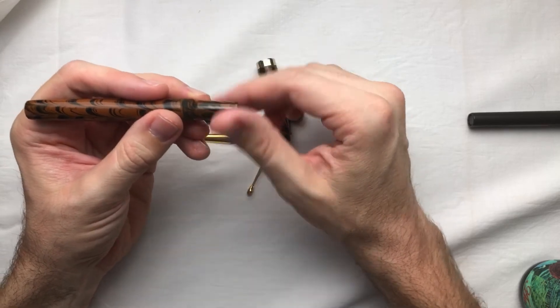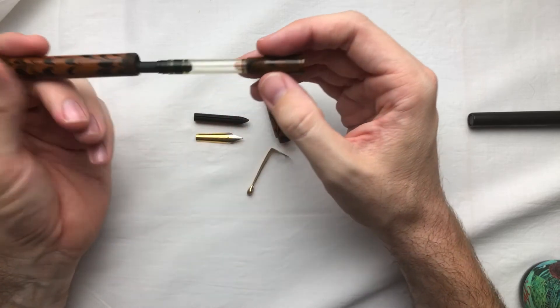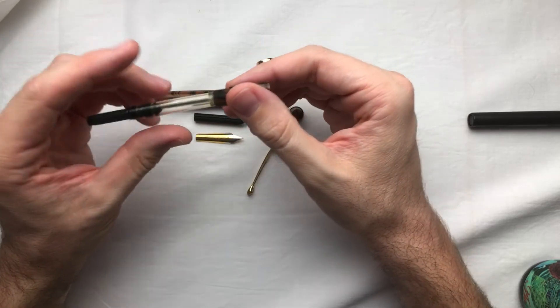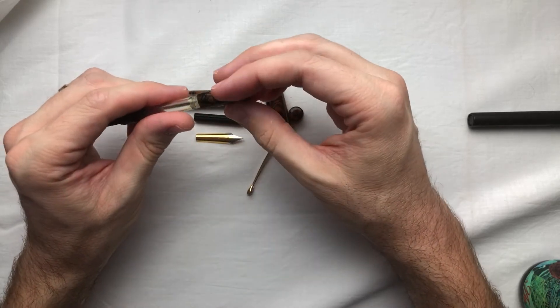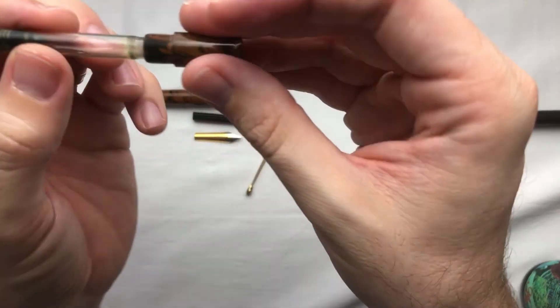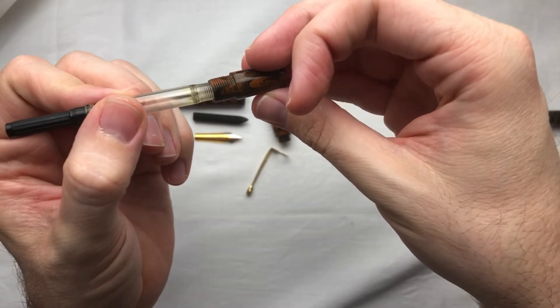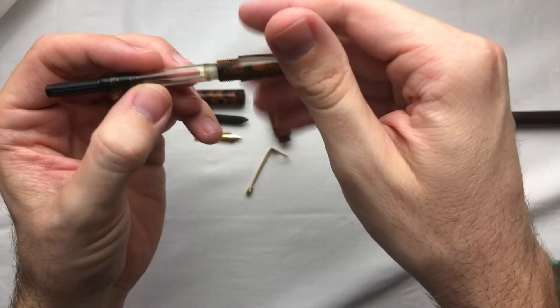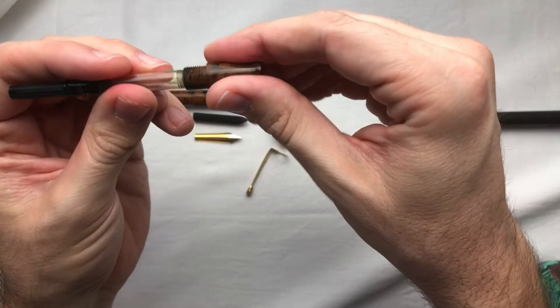So the section unscrews here. And the body is very simple. There's a converter included. This is not a standard international converter as far as I know. And one of the differences is because, look right here, it's threaded. So it screws right in there. Since it comes with the converter, it doesn't really bother me that it's a special kind of converter that's needed.